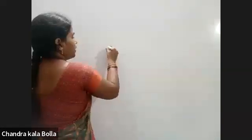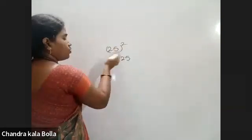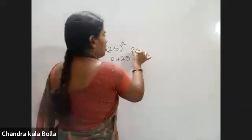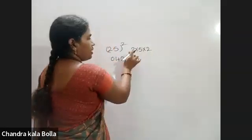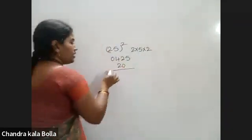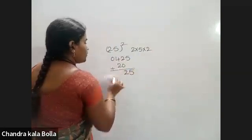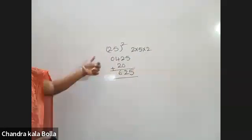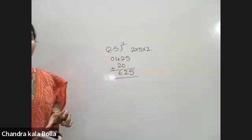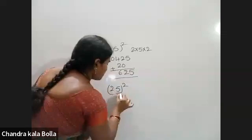For example, 25 whole square — using this method: 5 squared value is 25, next 2 squared value is 4, we note 0. Then 2 fives are 10, into 2 is 20. Ones place is 0, carry 2. Then 0 plus 2 is 2; next 2 plus 4 is 6. So 625.